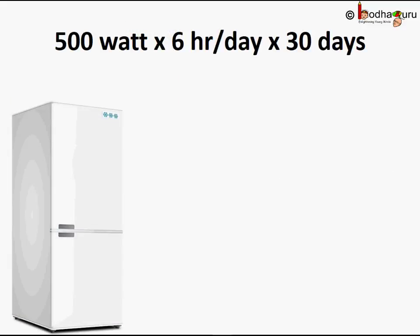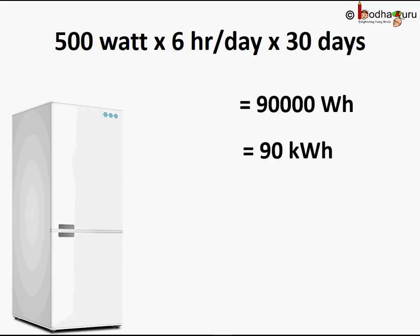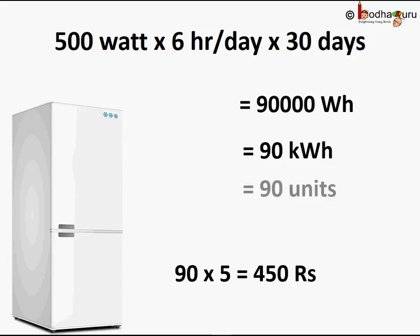Another example: a refrigerator rated 500 watts is operated for six hours every day. How much electricity bill do you have to pay for it in a month? Total energy required for the month equals 500 watts into six hours per day into 30 days per month, which equals 90,000 watt-hours. The day units cancel out, leaving watt-hours. Since the commercial unit is kilowatt-hour, we divide by 1000 to get 90 kilowatt-hours — that is 90 units of electrical energy consumed in one month.